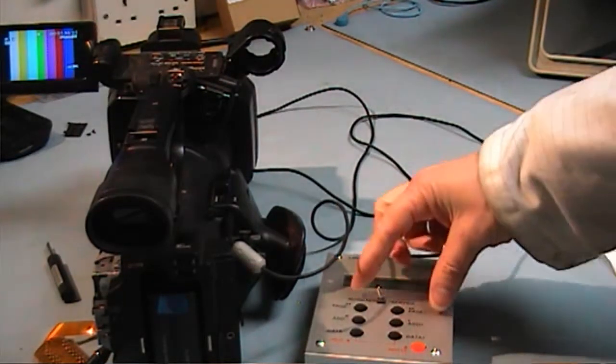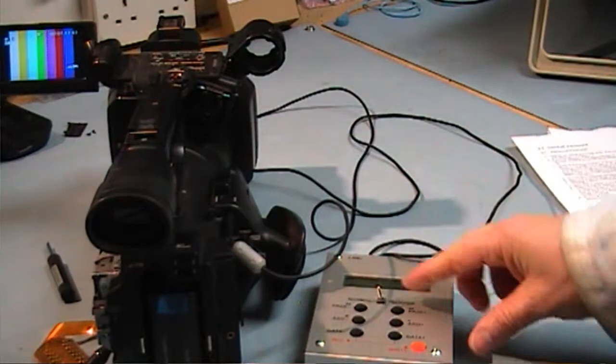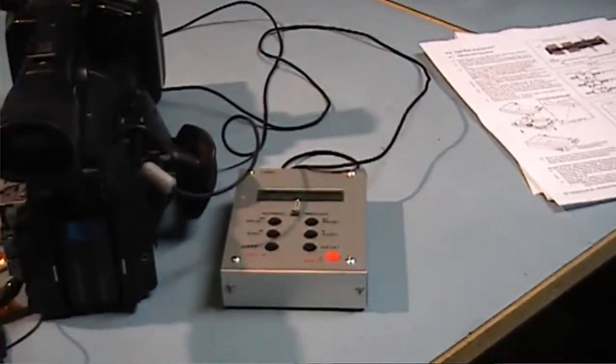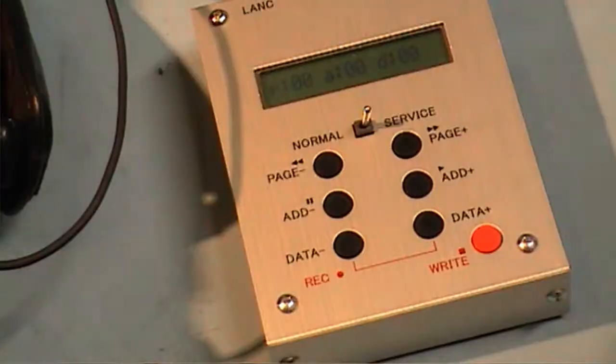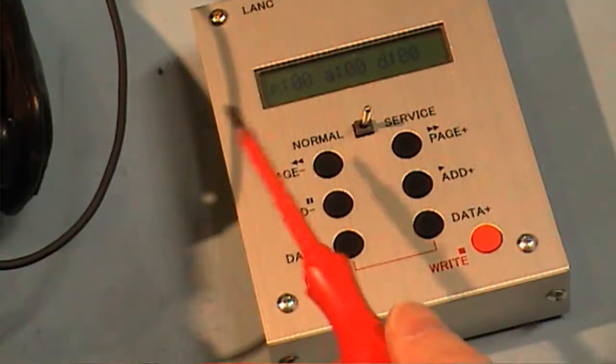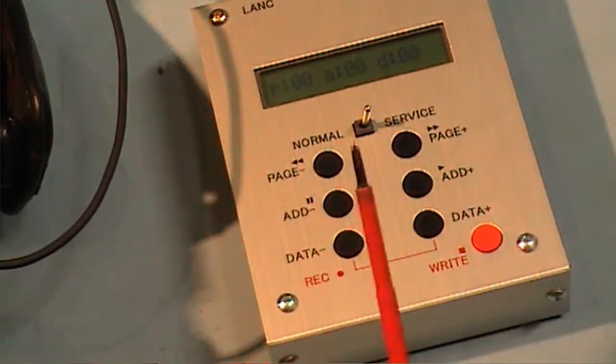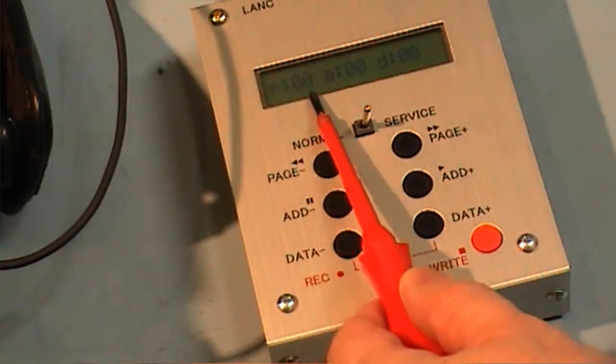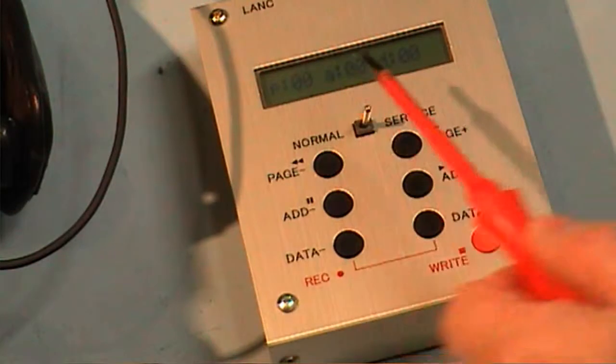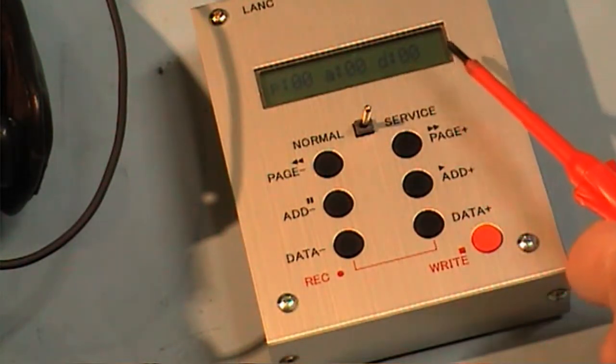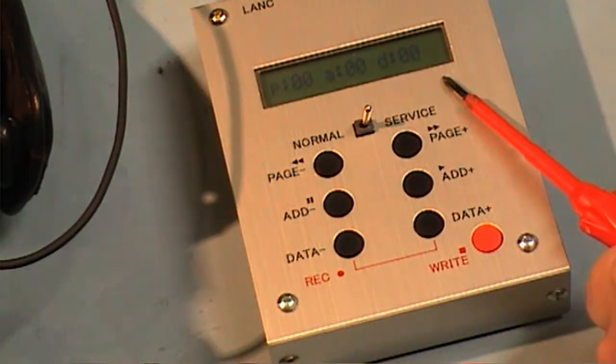Then what I have to do is put the link remote to the service position. Now we have our three sets of digits on the remote link connector. The first two digits is the page number, the second two digits are the address numbers, and the last two digits is the actual data in the address.